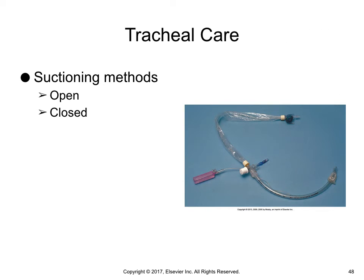Tracheal Care: the two current methods of suctioning are the open and closed methods. Open suctioning involves using a new sterile catheter for each suction session — wear sterile gloves and follow standard precautions. Closed suctioning involves using a reusable sterile suction catheter encased in a plastic sheath to protect it between suction sessions. Closed suctioning is most often used on patients requiring invasive mechanical ventilation because it permits continuous delivery of oxygen while suction is performed and reduces the risk of oxygen desaturation.